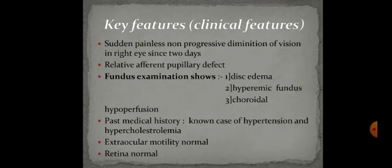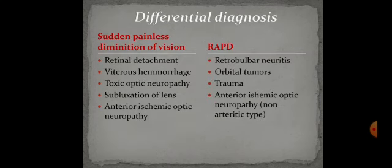We need to rule out other conditions with similar clinical features. Sudden painless diminution of vision is also present in retinal detachment — but in our case, the retina is normal. Vitreous hemorrhage is excluded as there is no history of floaters. Toxic optic neuropathy is excluded as there is no history of drug intake like tobacco, ethambutol, isoniazid, or alcohol. Subluxation of lens is excluded as the posterior chamber IOLs are well positioned.